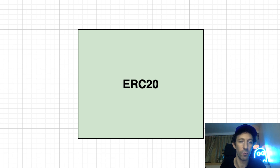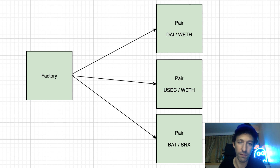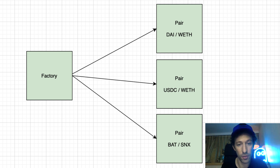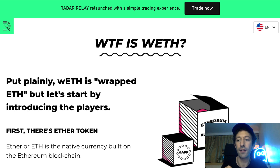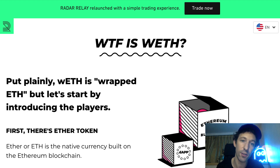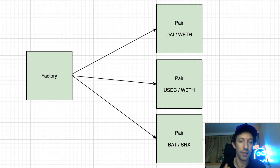Now let's see how the smart contracts interact with each other. The factory can create different pair smart contracts with any combination — for example, AAVE and SNX, or a token and wrap ether. If you've never heard of wrap ether, it's basically an ERC20 token version of ether, where one wrap ether equals one ether. In Uniswap v1 you could create markets with ether directly, but in v2 you can only create pairs with wrap ether. Anybody can create a new pair — this is a permissionless system. All you have to do is call the factory smart contract with the correct parameters.